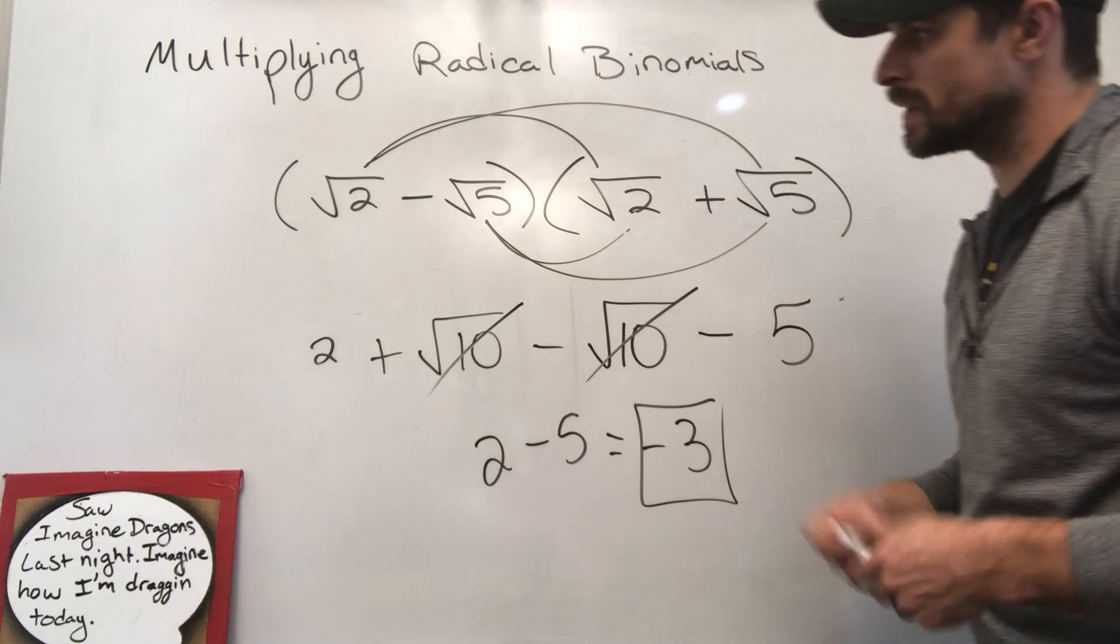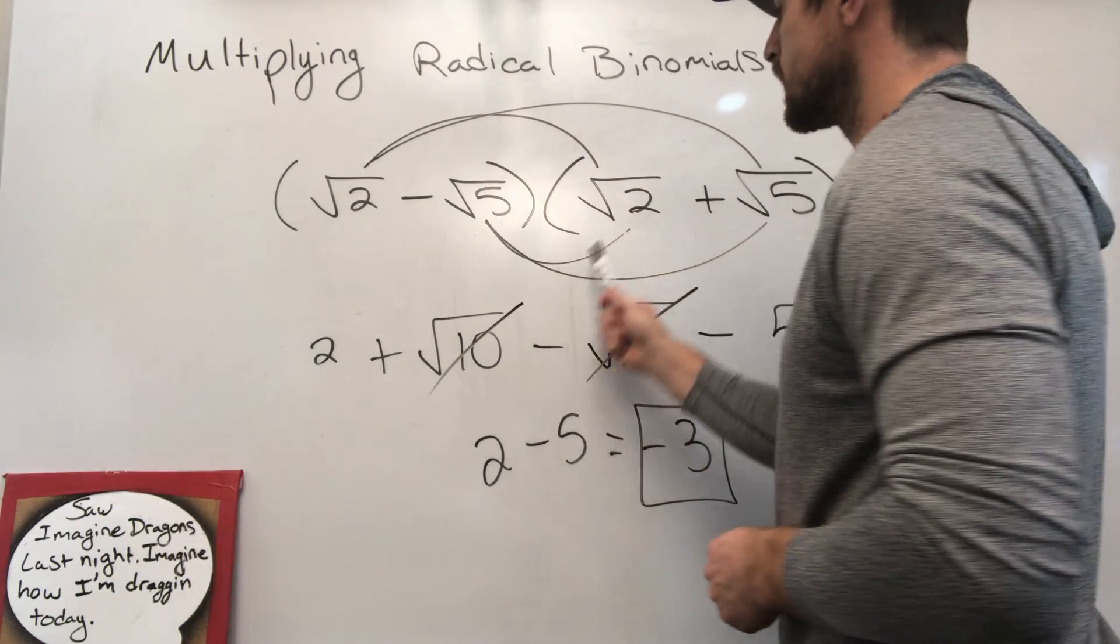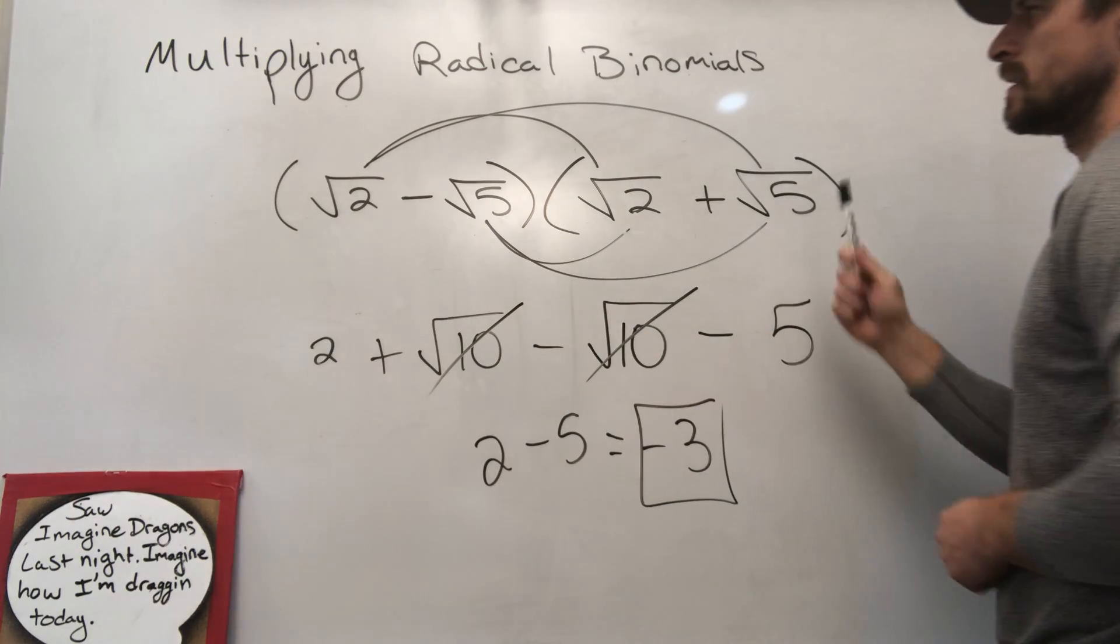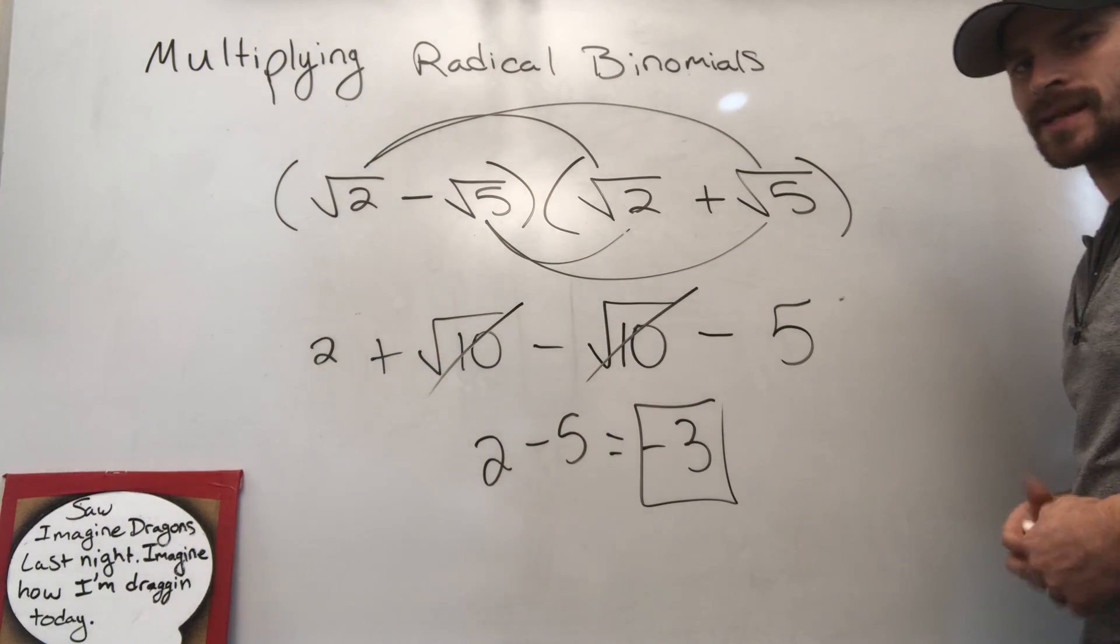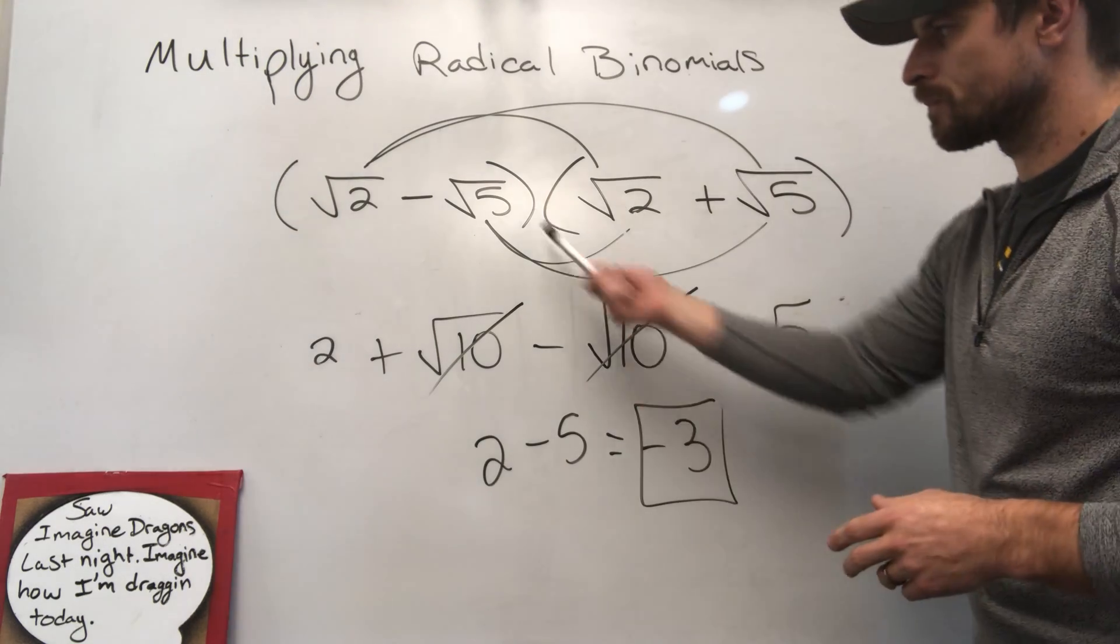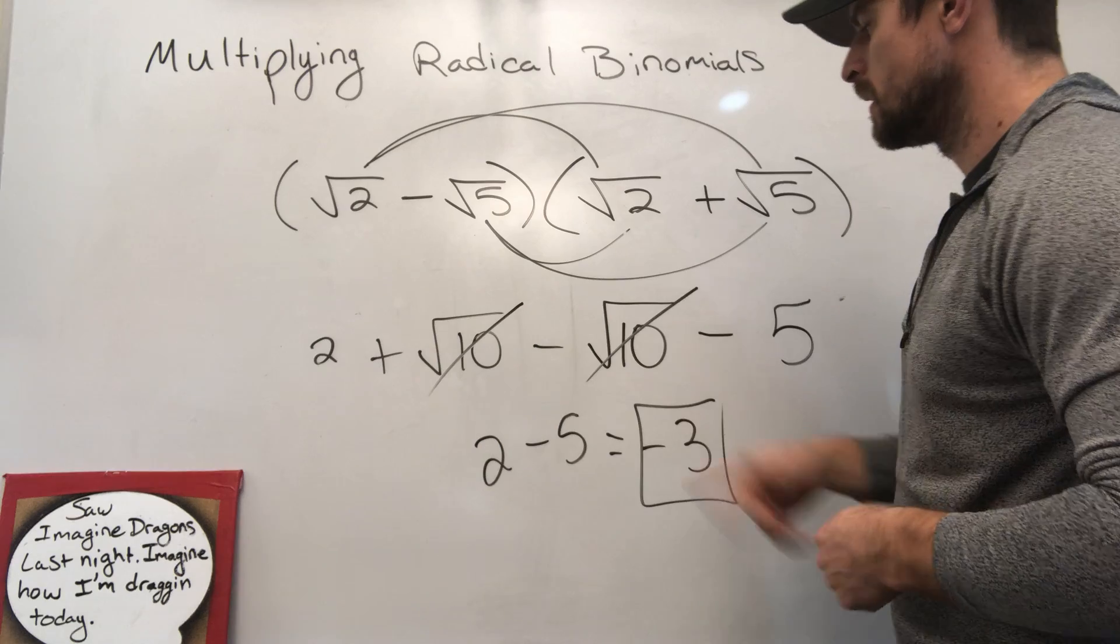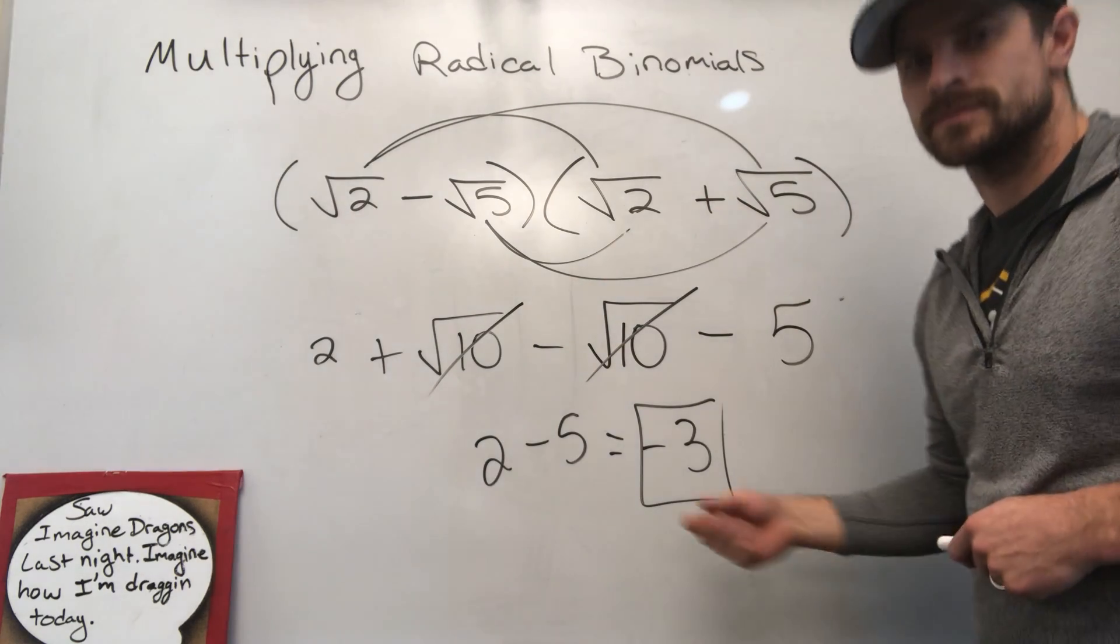Study hard. FOIL method: first, outside, inside, last. With radicals, nothing's really going to change. You're just following the same steps with the FOIL method. Remember, 5 times 2 makes 10, put it under the radical. All right, study hard.